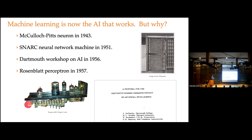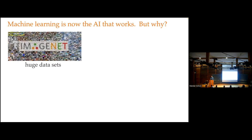This is an old field. These days we think of machine learning as the AI that works, but AI and machine learning have been around for a long time. The perceptron goes back to 1957 as a physical piece of hardware, and our modern framing of the artificial intelligence problem goes back to 1956 or so. And then suddenly it seems like it's gotten very exciting. It's worth asking: why did it get exciting?